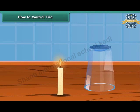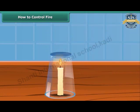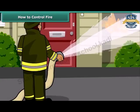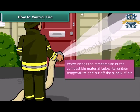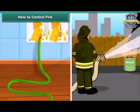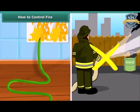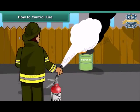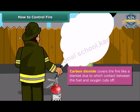Now we will see how fire can be put out. Fire needs oxygen, heat, and fuel to exist. However, it can be extinguished by removing any one of them. You must have seen firemen throwing water on fire — water brings the temperature of the combustible material below its ignition temperature and cuts off the supply of air. But water is not a good extinguisher for electrical or oil fires. For electrical and oil fires, it is best to use carbon dioxide as an extinguisher. Carbon dioxide, being heavier than oxygen, covers the fire like a blanket, cutting off contact between the fuel and oxygen.